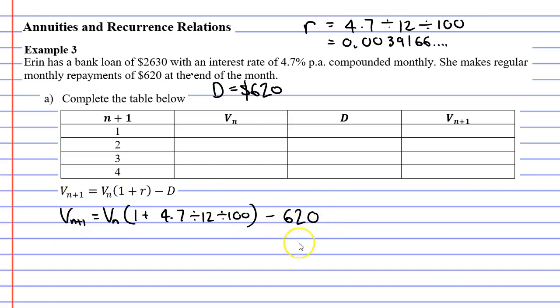I'm not going to write any rounding yet. Next, we need to subtract our repayment, our repayment being 620. And we're just going to use this formula to make our calculations. So we'll start where we always start at V_0. V_0 stands for the value of the loan after zero years has passed or at the beginning of the loan. We are told that Aaron has a bank loan of $2,630 at the beginning. So V_0 is $2,630.